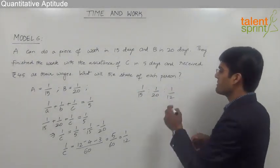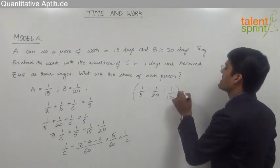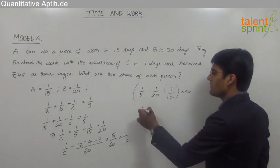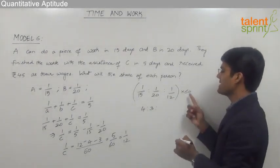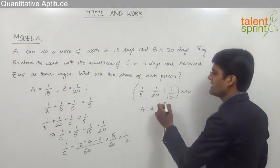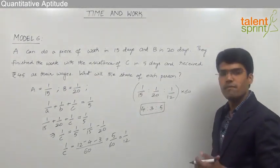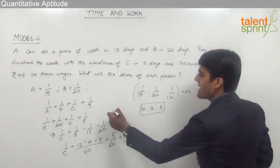Now to simplify this ratio, let us multiply the whole thing with 60 so that we get a proper ratio. So 60 divided by 15 will be 4, 60 by 20 will be 3, and 60 by 12 will be 5. So this is the ratio in which the total amount of Rs 45 is to be divided among the 3 persons A, B and C.